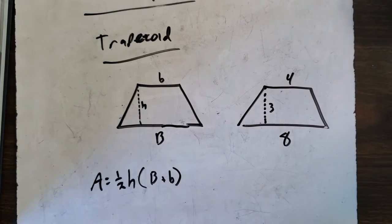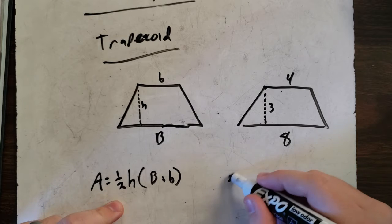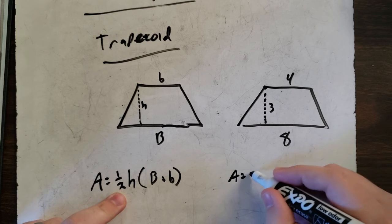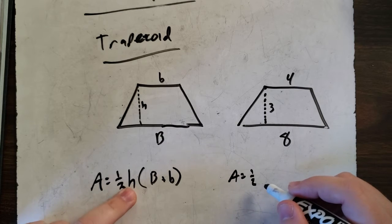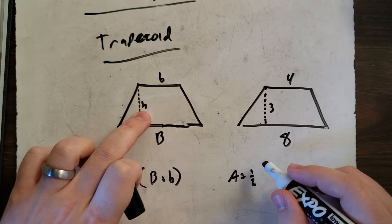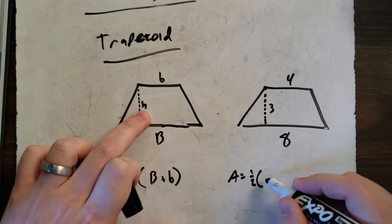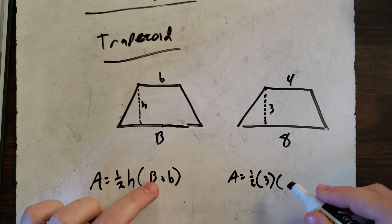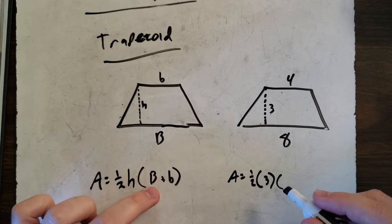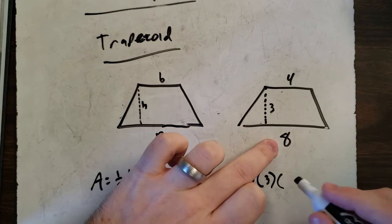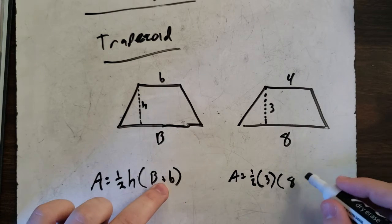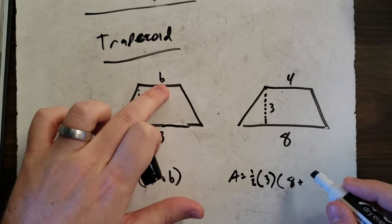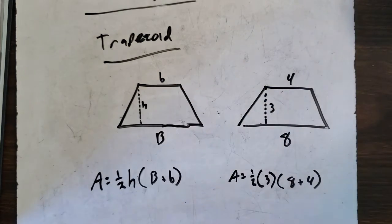So plug it into your formula. Here's your formula here. A equals one-half times the height. What's our height? Our height is right here. Our height is three. Times the sum of the bases. So our big B is eight plus our little b, which is four.